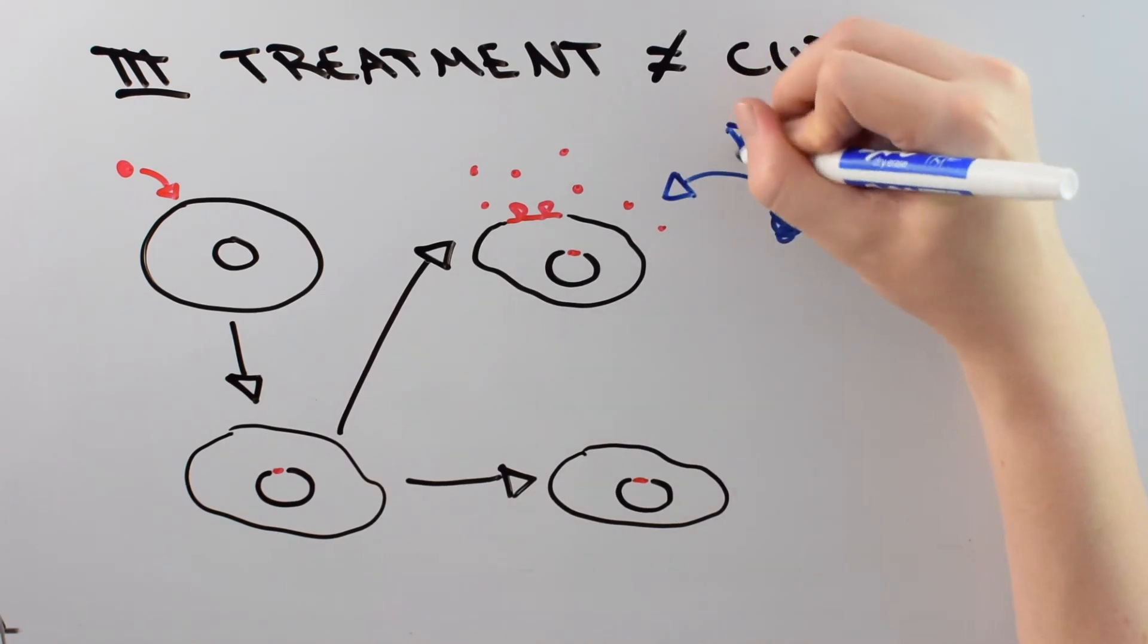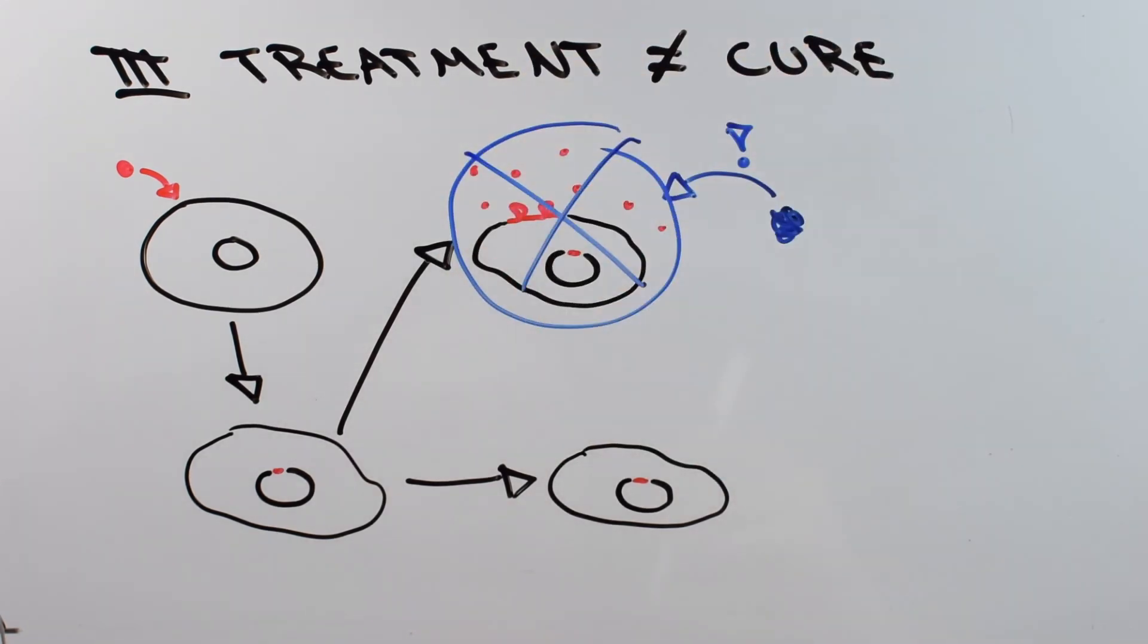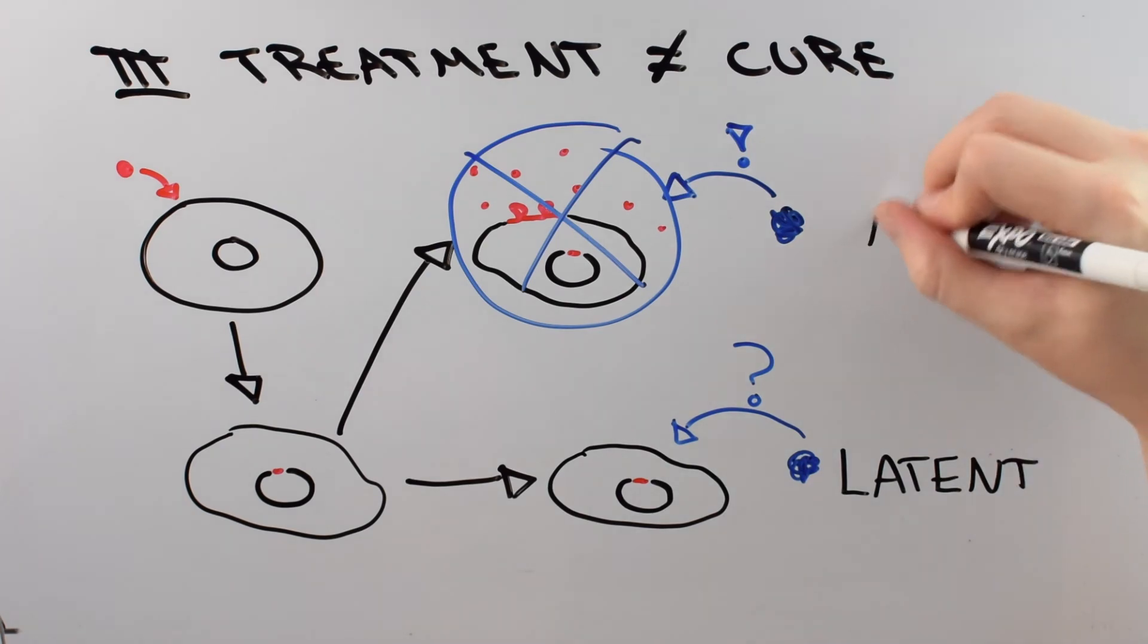The inhibitors can recognize and shut down a cell that's making HIV. But they can't recognize or know what to do with a cell that's not making HIV. The cell that's not making any HIV right now is called latent, whereas a cell making HIV is called active.